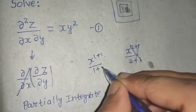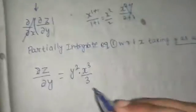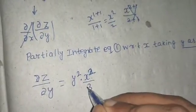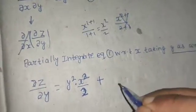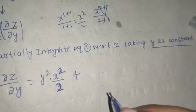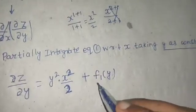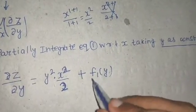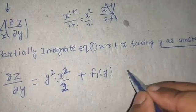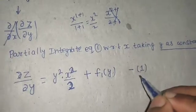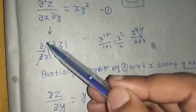So X squared becomes X squared divided by 2. A constant of integration will come, and because we treated Y as constant, the constant of integration is written as a function of Y — let's write this as F1(Y). So this is your equation number two.